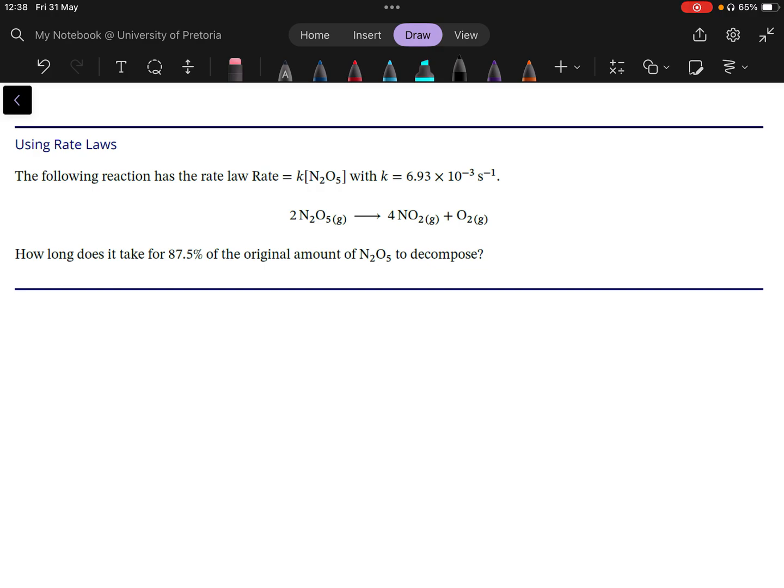And specifically, we're given a reaction that we're told the rate law of this reaction is rate equals K multiplied by N₂O₅, with K a specific value. And I want you to specifically look at the units of K. We're given it as per second. You can notice that it is a decomposition reaction, not only because it's just one reactant going to two products, but also because it says decompose.